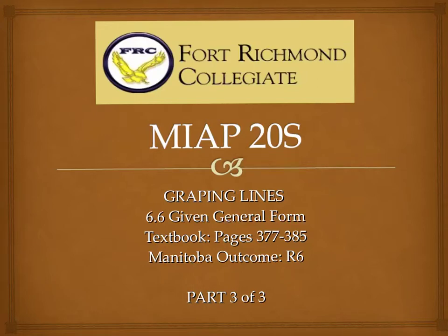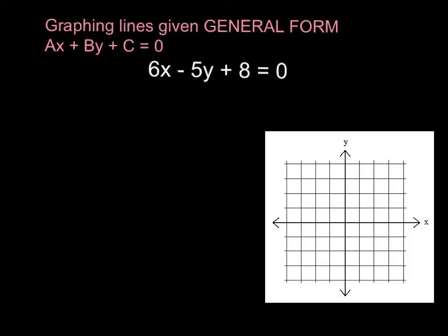We're going to have a look at what general form is and then we're going to look at a couple of strategies that we can use to graph lines given general form. Here it is: we have this Ax + By + C = 0. That's general form.